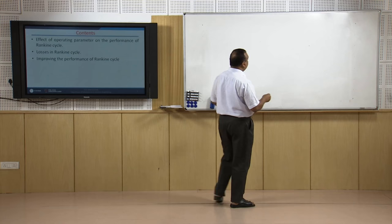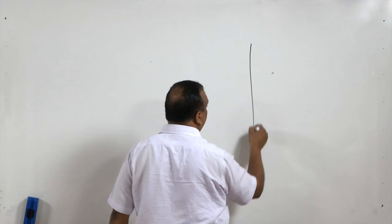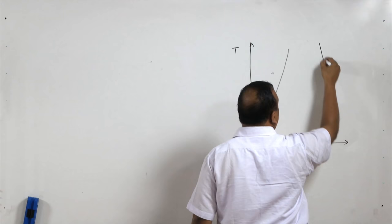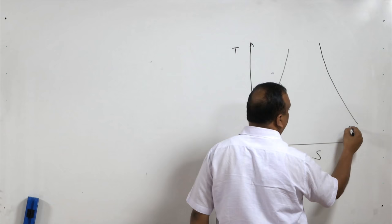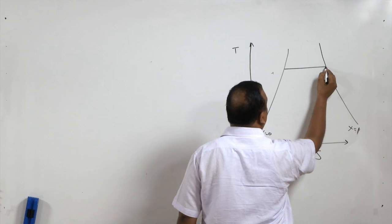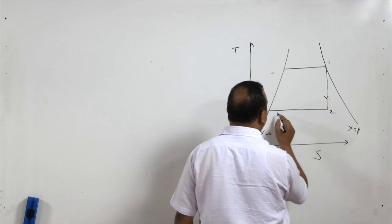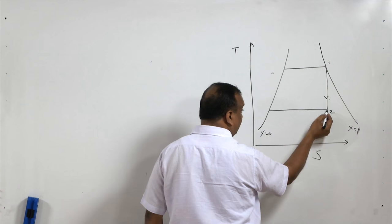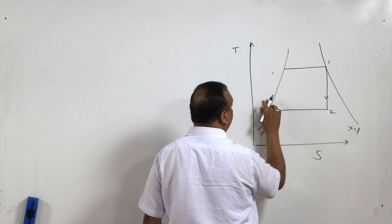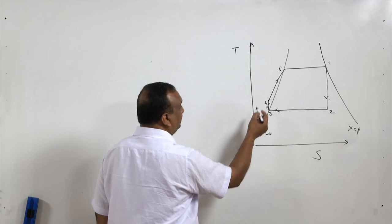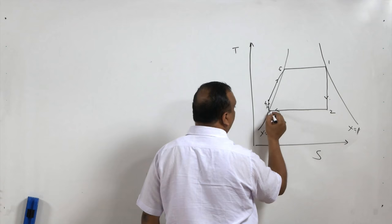In a Rankine cycle, there are four processes. If you draw the Rankine cycle on a temperature-entropy diagram, there is a saturation line for the liquid and a saturation line for saturated vapor — x=0 and x=1. State 1 is at quality 1, expansion in the turbine leads to state 2, then complete condensation in the condenser gives state 3, then pressure is increased in the pump from state 3 to 4. Process 4 to 5 and 5 to 1 takes place inside the boiler.